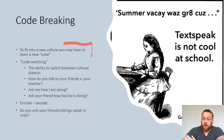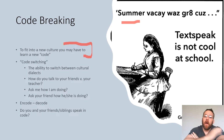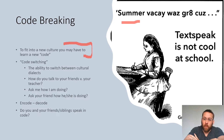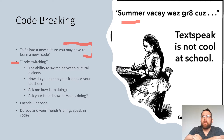In order to fit into a new culture, you need to sort of learn the code. There's this fun little meme: 'Summer vacay was great' — tech speak is not cool at school. You all understand that there are ways in which you write your papers that are different than the ways in which you text your friends or write a post on Facebook or Instagram. This is known as code switching — when you switch the ways in which you are communicating as far as grammar, sentence structure, and vocabulary. Being able to switch between cultural dialects.